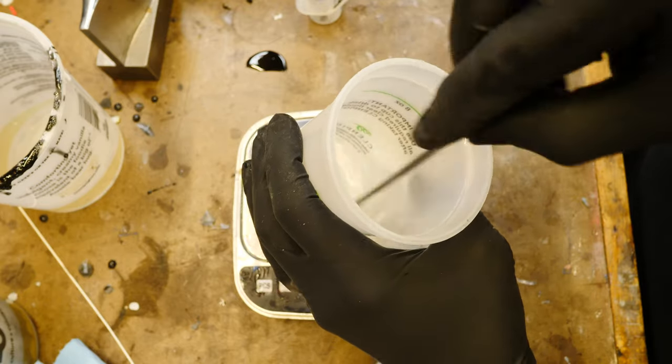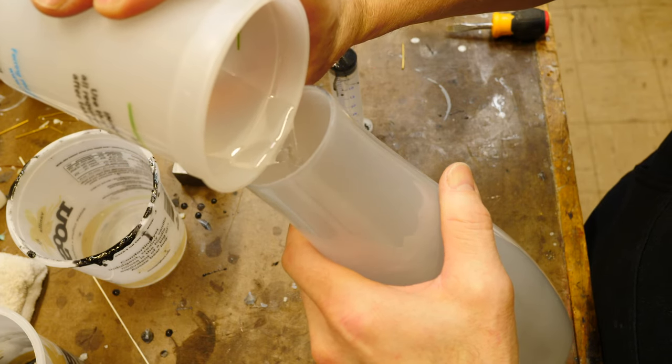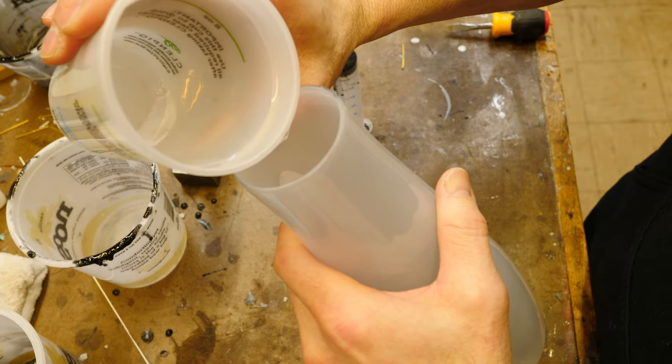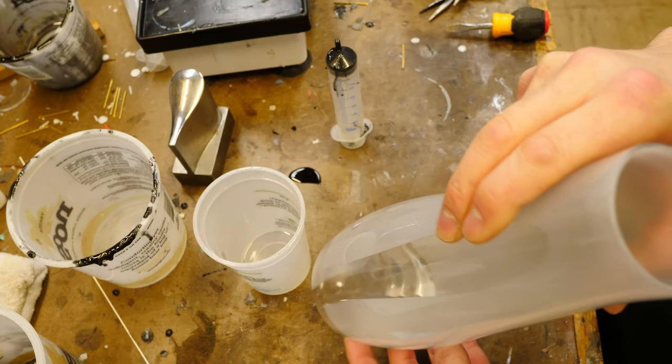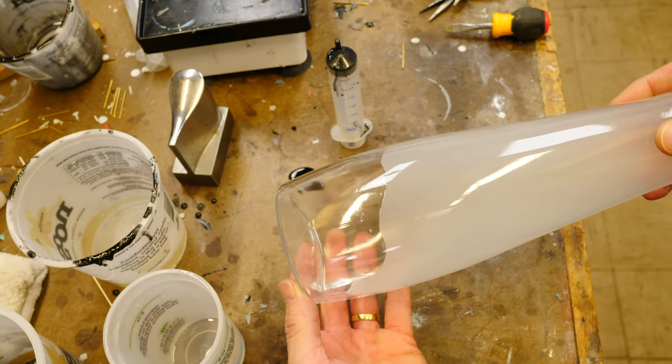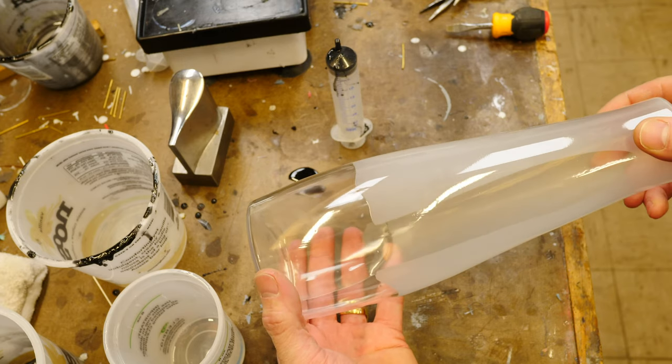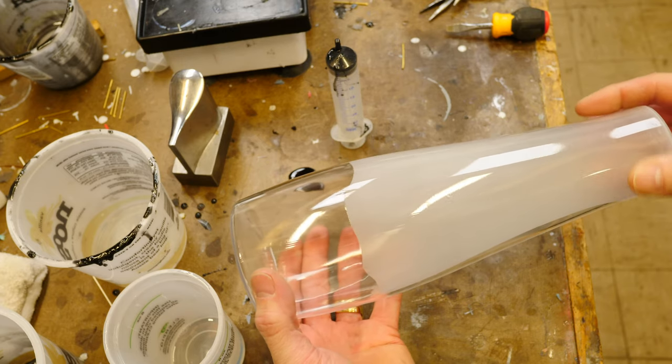You mix that up really nice and good. Now, since I can't spray paint the inside of the bottle, I'm just going to pour the clear coat into the bottle and we're going to slowly turn the bottle around to make sure that we get a nice uniform coating on the inside of the bottle.